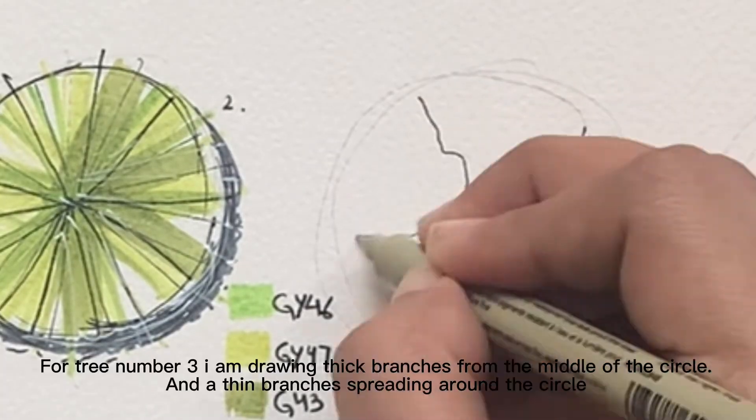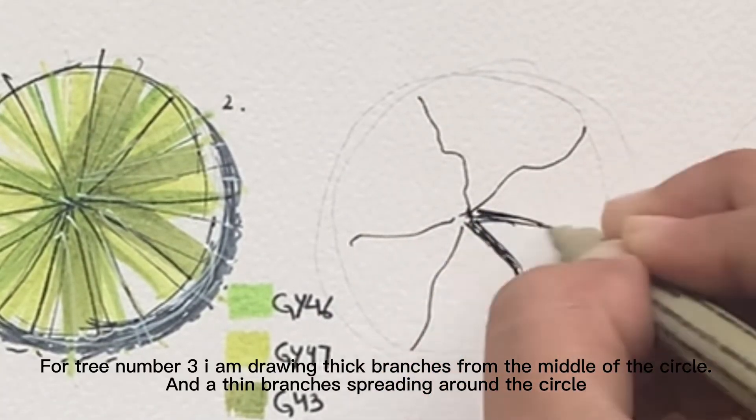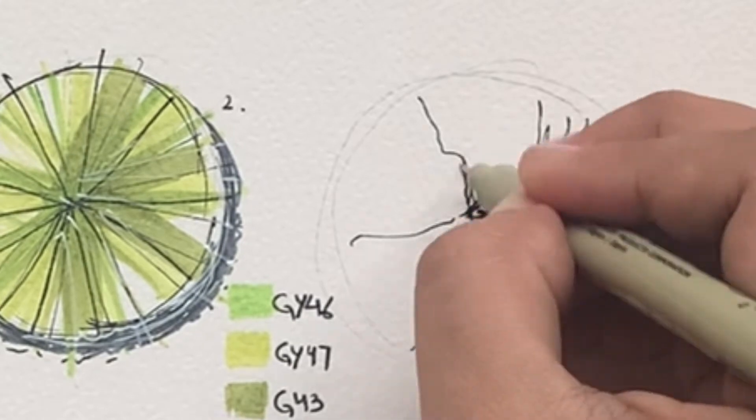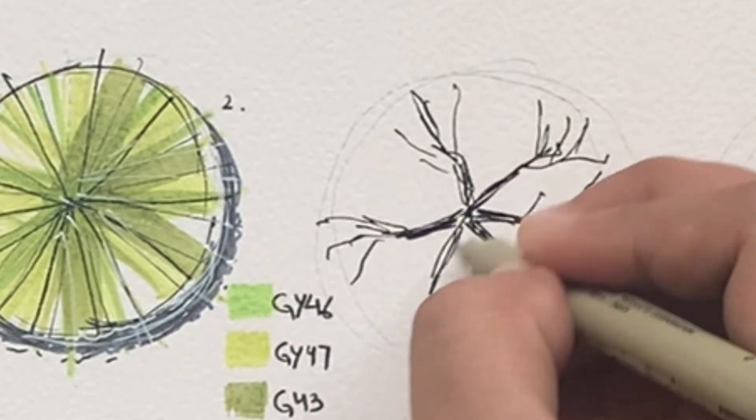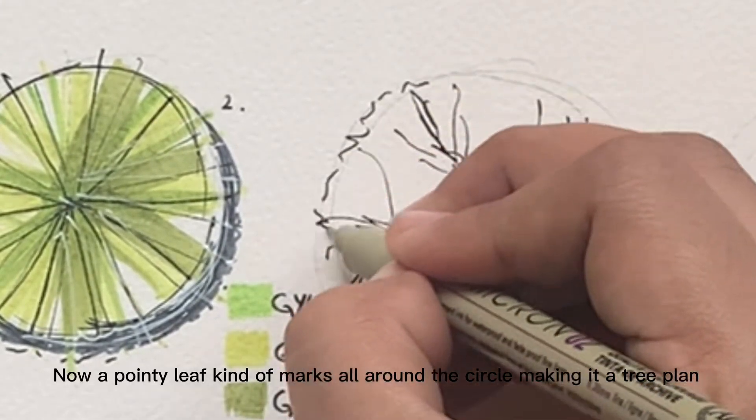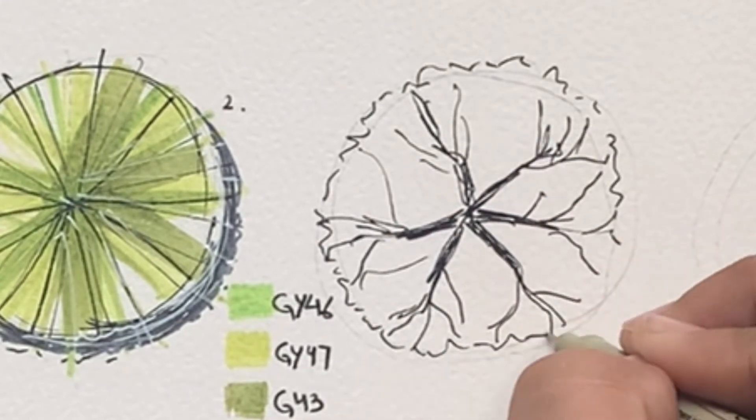For tree number three I am drawing thick branches from the middle of the circle and thin branches spreading around the circle. Now pointy leaf kind of marks all around the circle making it a tree plan.